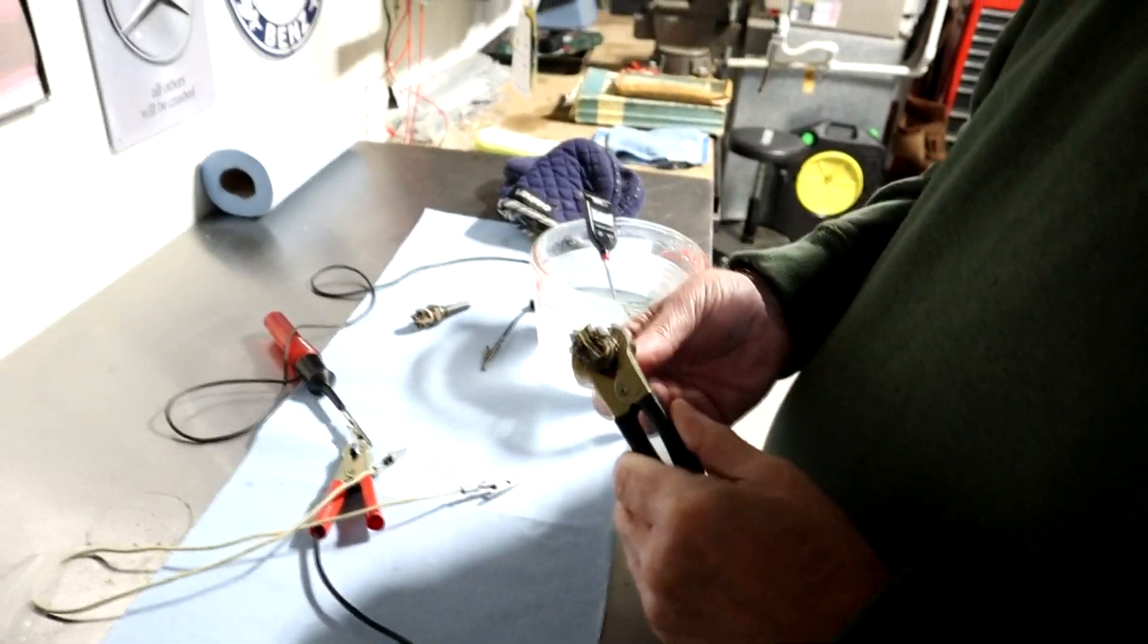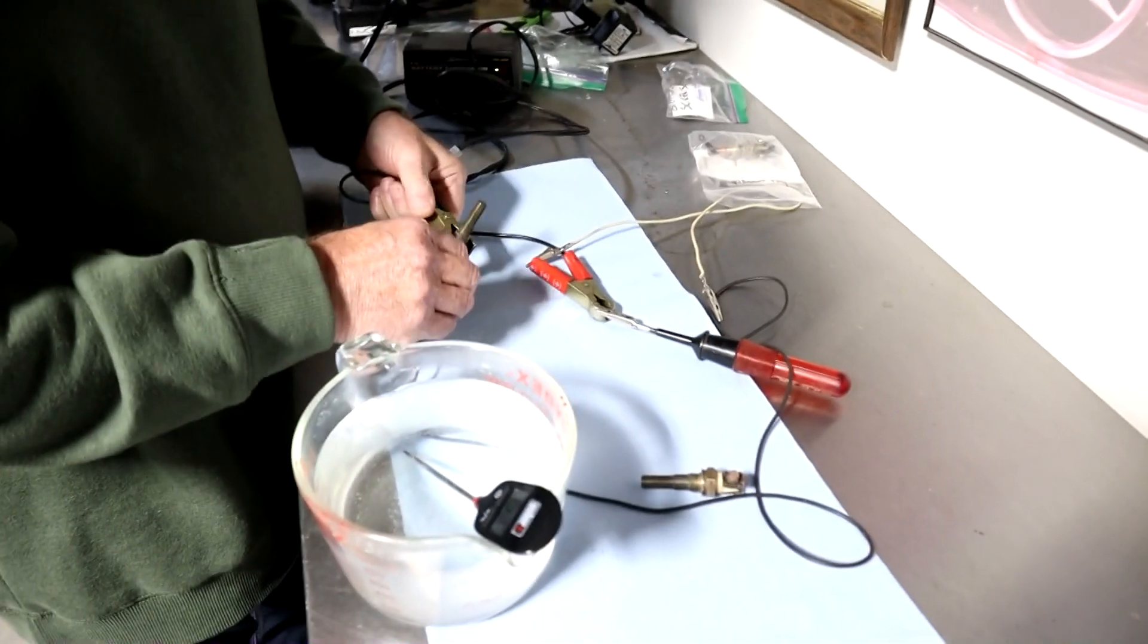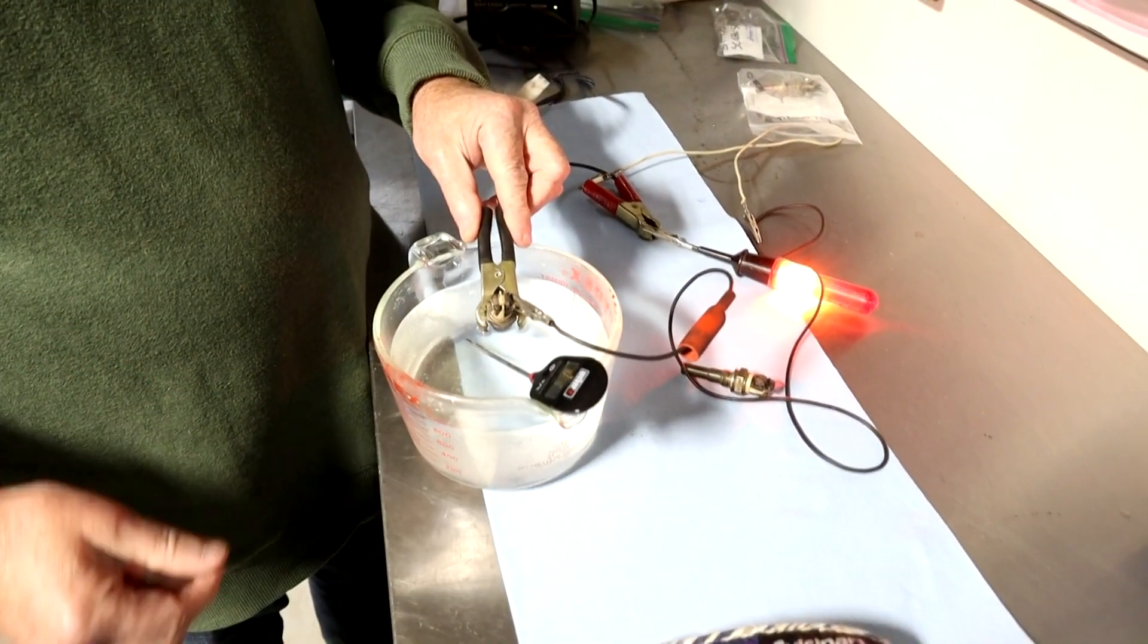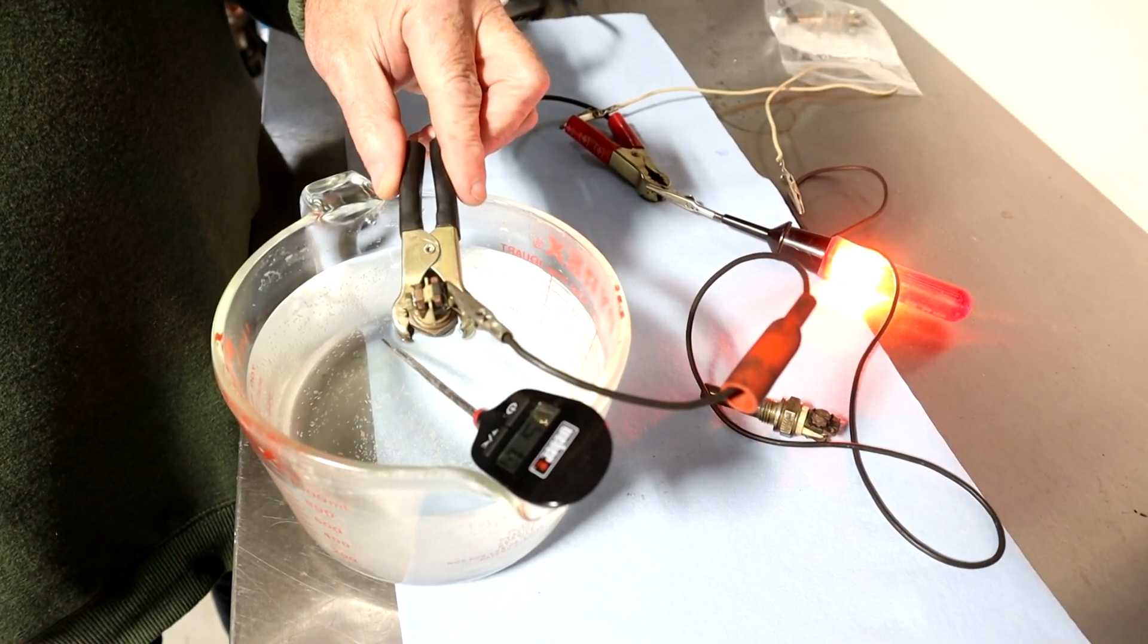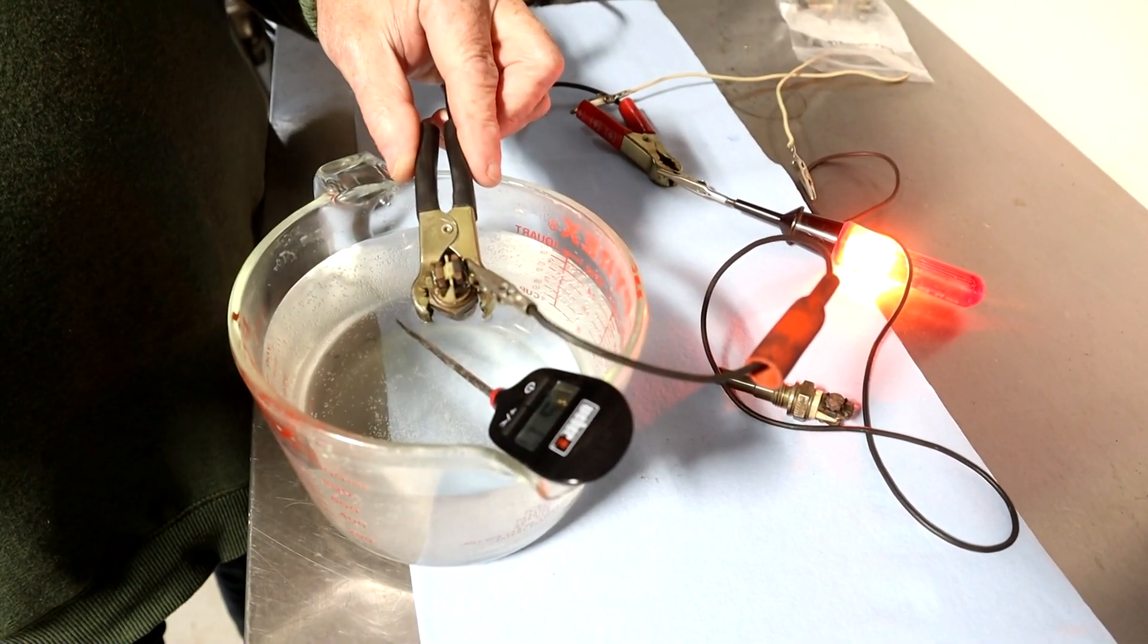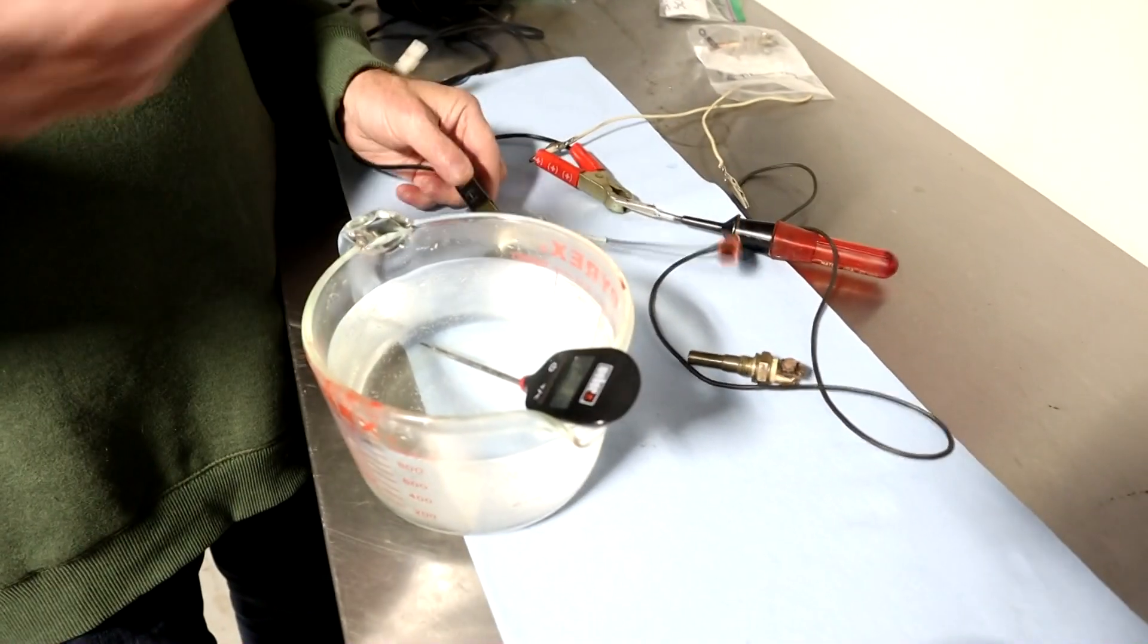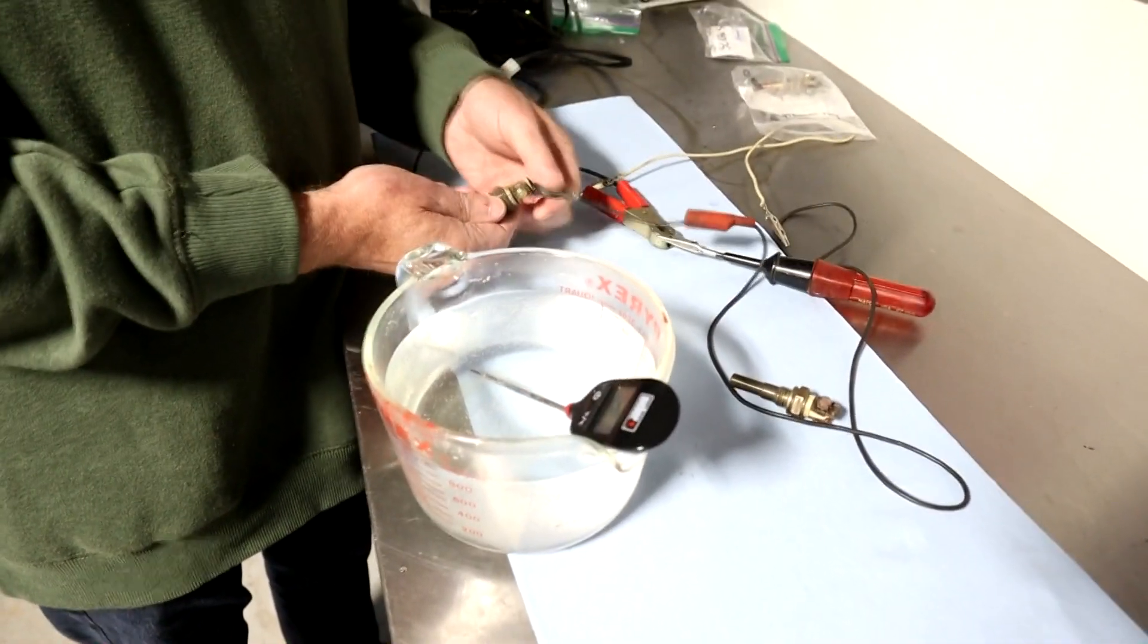Once it's heated up we measure the ground again, it should not be there. We've got hot water from the microwave, about 150 degrees. This was the good one, we have to give it ground. Now I'm dunking it in hot water. It'll take a while because the coil is much quicker, but this will be in the engine. There you go, about 20 seconds.